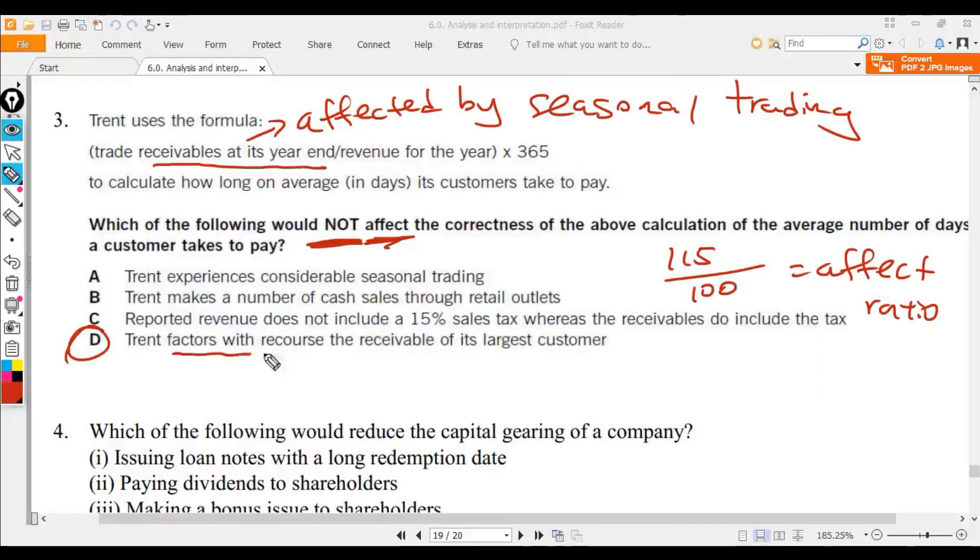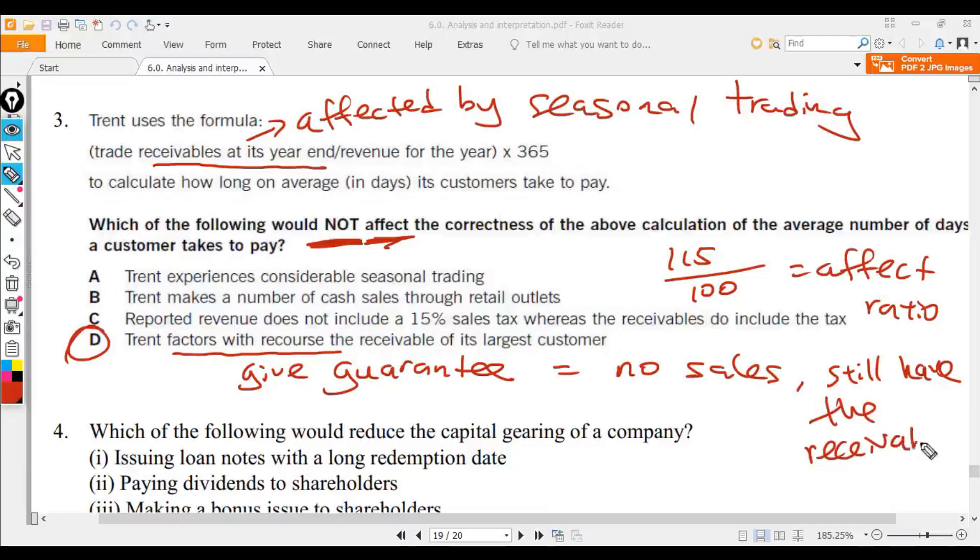If you factor with recourse that means you give guarantee. That means there's no sale. You still have the receivable. No sale of receivable. You still have the receivable.